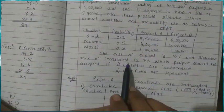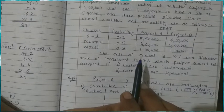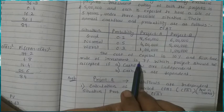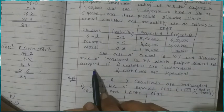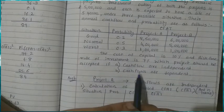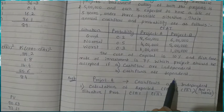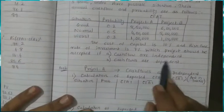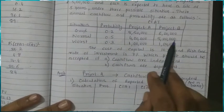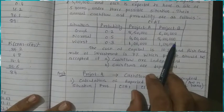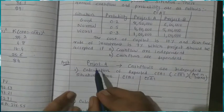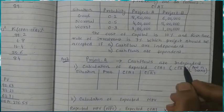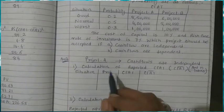In case of the probability distribution method, the risk-free rate is used. We need to find which project should be accepted if the cash inflows are independent and if the cash flows are dependent. We will calculate for both project A and project B. First, let's take project A where cash inflows are independent.